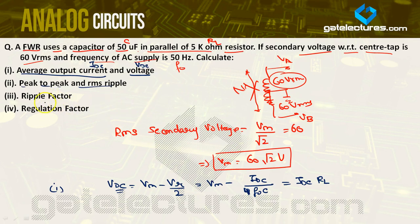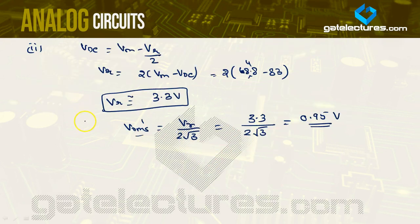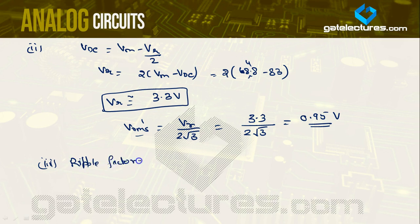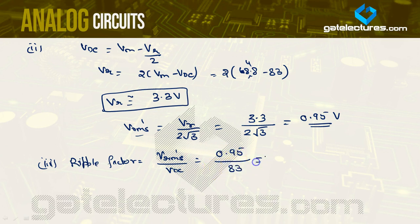The third part is ripple factor. Ripple factor equals Vrms' by VDC equals 0.95 divided by 83, which gives approximately 0.0114. This is the ripple factor of the circuit.